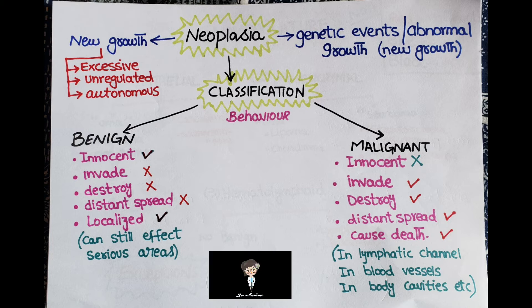Classification of neoplasia is significant in clinical settings. The most important classification is by clinical behavior, dividing neoplasms into two major groups: benign tumors and malignant tumors. The terms neoplasm and tumor can be used interchangeably. Malignant tumors are referred to as cancer — a word derived from 'crab,' possibly due to the morphological spread of cancer.